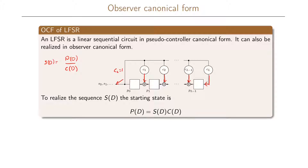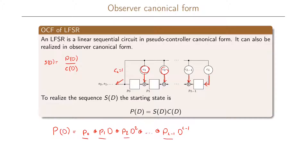Whether we have this feedback or not is determined by our coefficients C up to C_L. An important thing to note is that if we write our polynomial P as P_0 plus P_1 plus P_2 and so on, the coefficients up to P_{L-1} will directly determine our starting state of this LFSR. So here we have P_0 for the starting state, P_1 up to P_L. Different from the controller canonical form, here we can from the polynomial P(D) immediately see the starting state of our shift register.